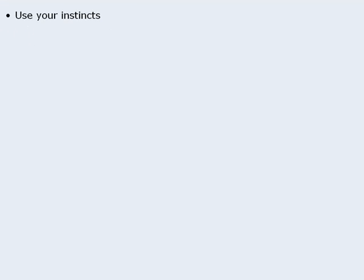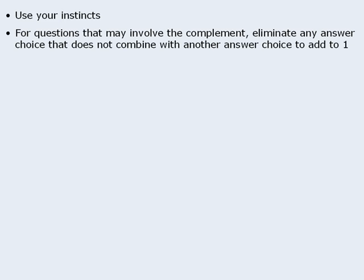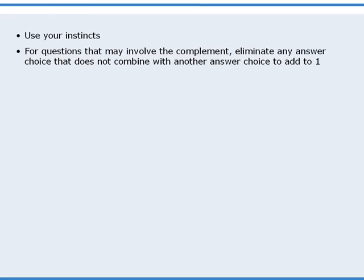Okay, let's summarize. In this lesson, we learned that if we're forced to guess on a probability question, we should use our instincts to eliminate answer choices that may seem unrealistic. And for questions that may involve the complement, we should eliminate answer choices that do not combine with other answer choices to add to one.